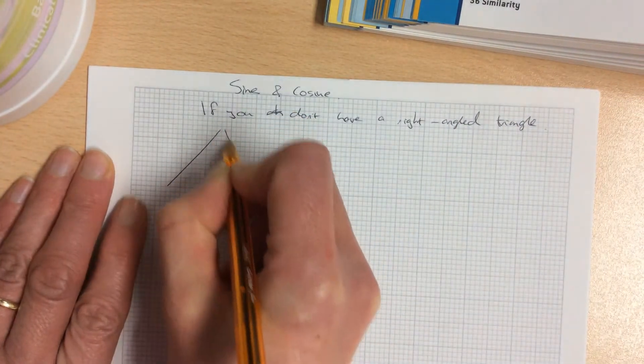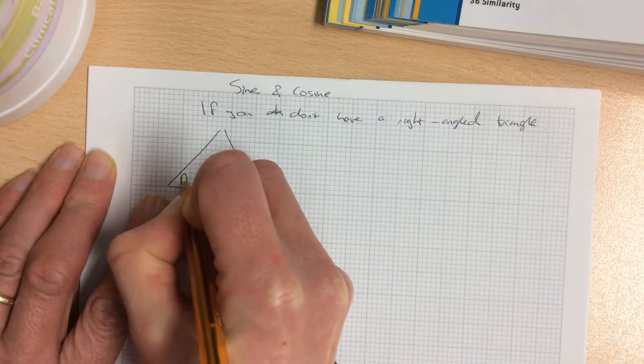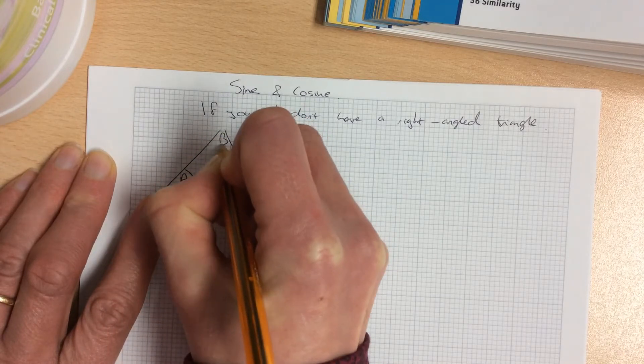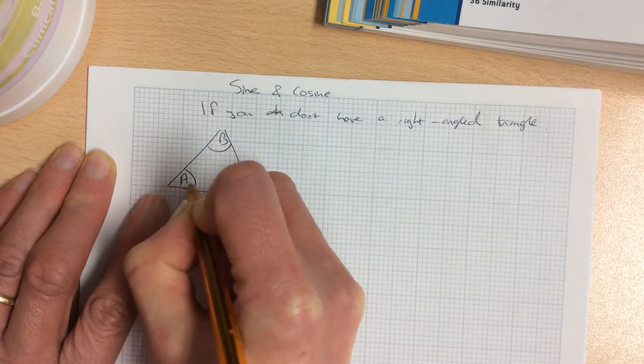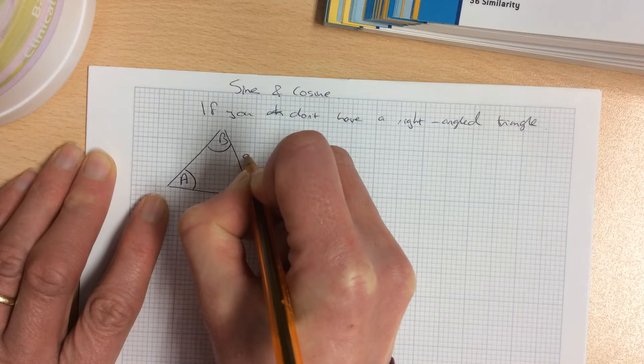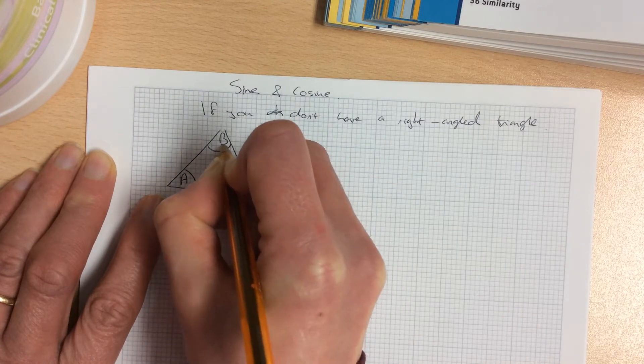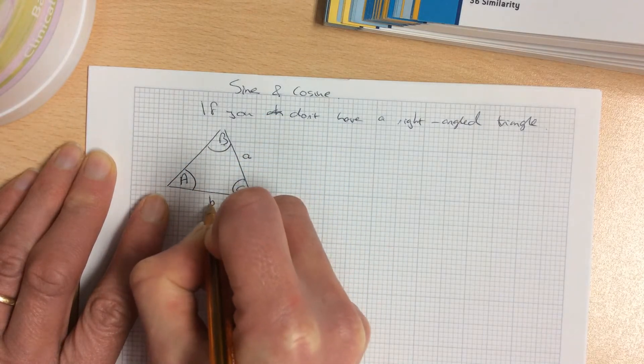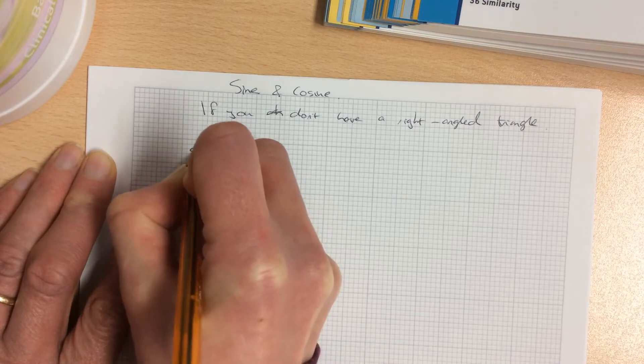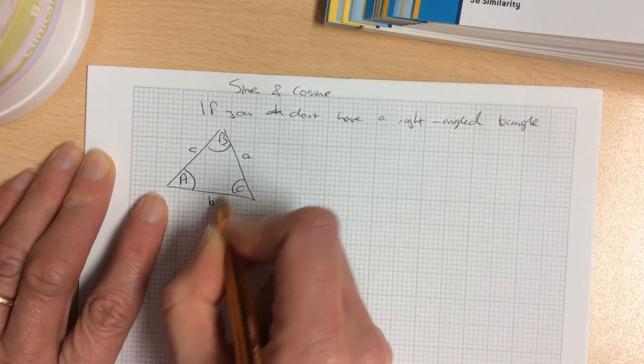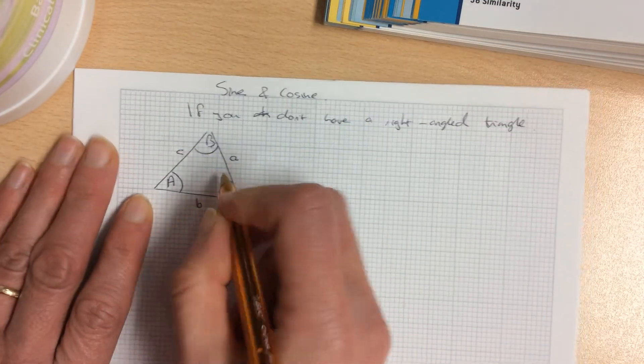They start off like this. Call the angles capital letters A, B, C. Opposite capital A is side a, small letter. Opposite capital B is small b. Opposite capital C is small c. So capitals for angles and small letters for sides.